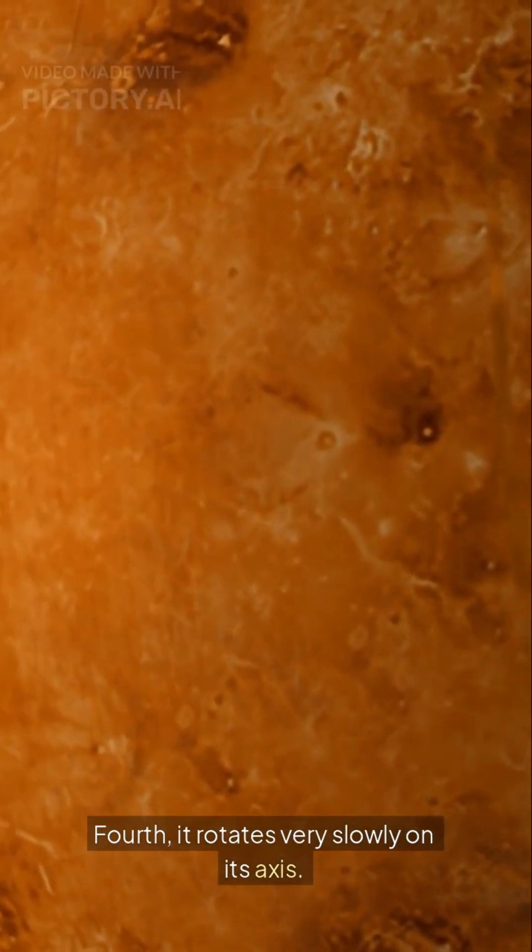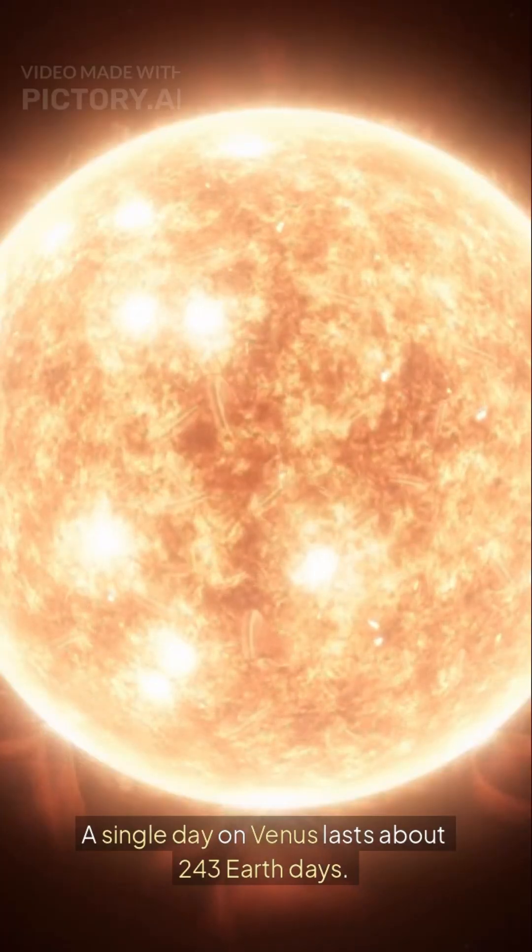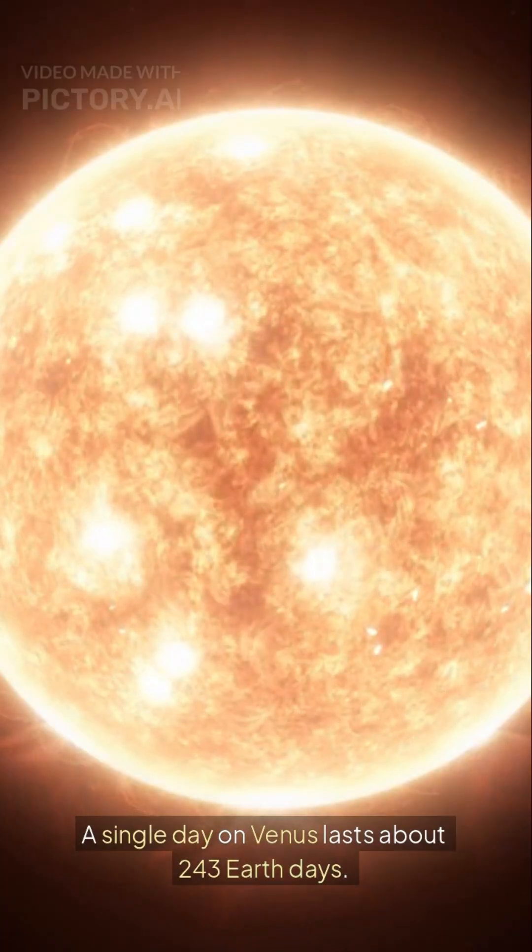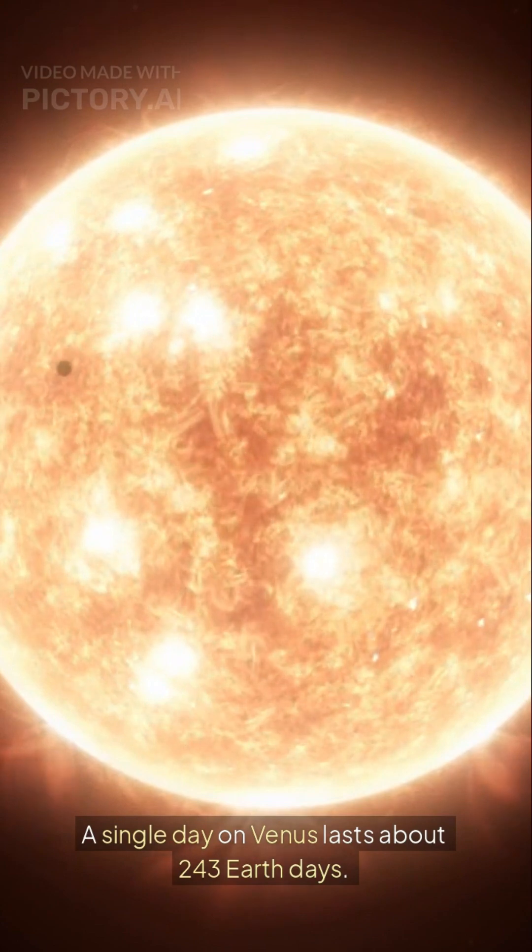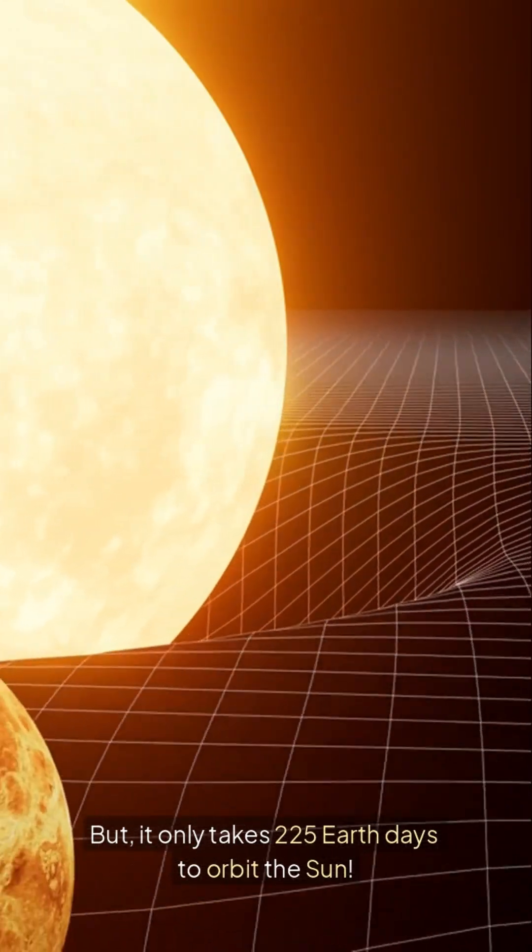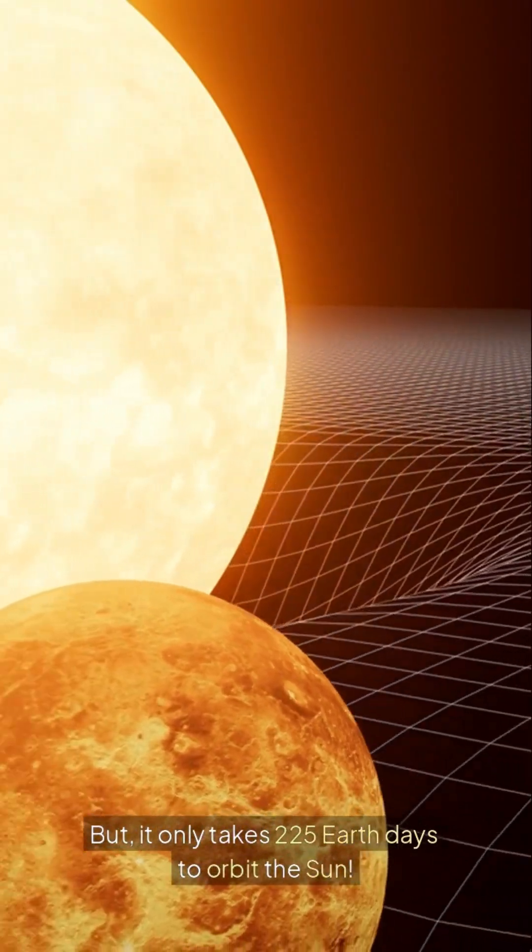Fourth, it rotates very slowly on its axis. A single day on Venus lasts about 243 Earth days. But it only takes 225 Earth days to orbit the Sun.